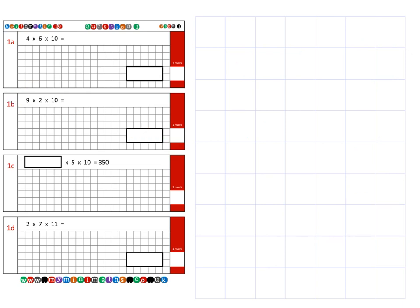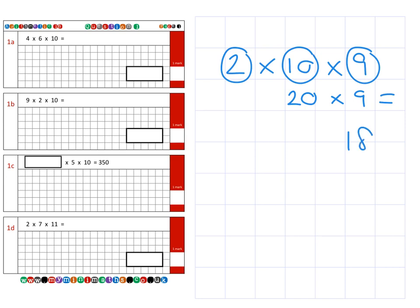And again, just to show that it doesn't matter which order we can do it in, we could take 2 times 10 and multiply that by 9. So, first of all, we have 2 times 10, which is 20. Then we're going to multiply it by the 9, and it gives us a final answer exactly the same as before of 180.